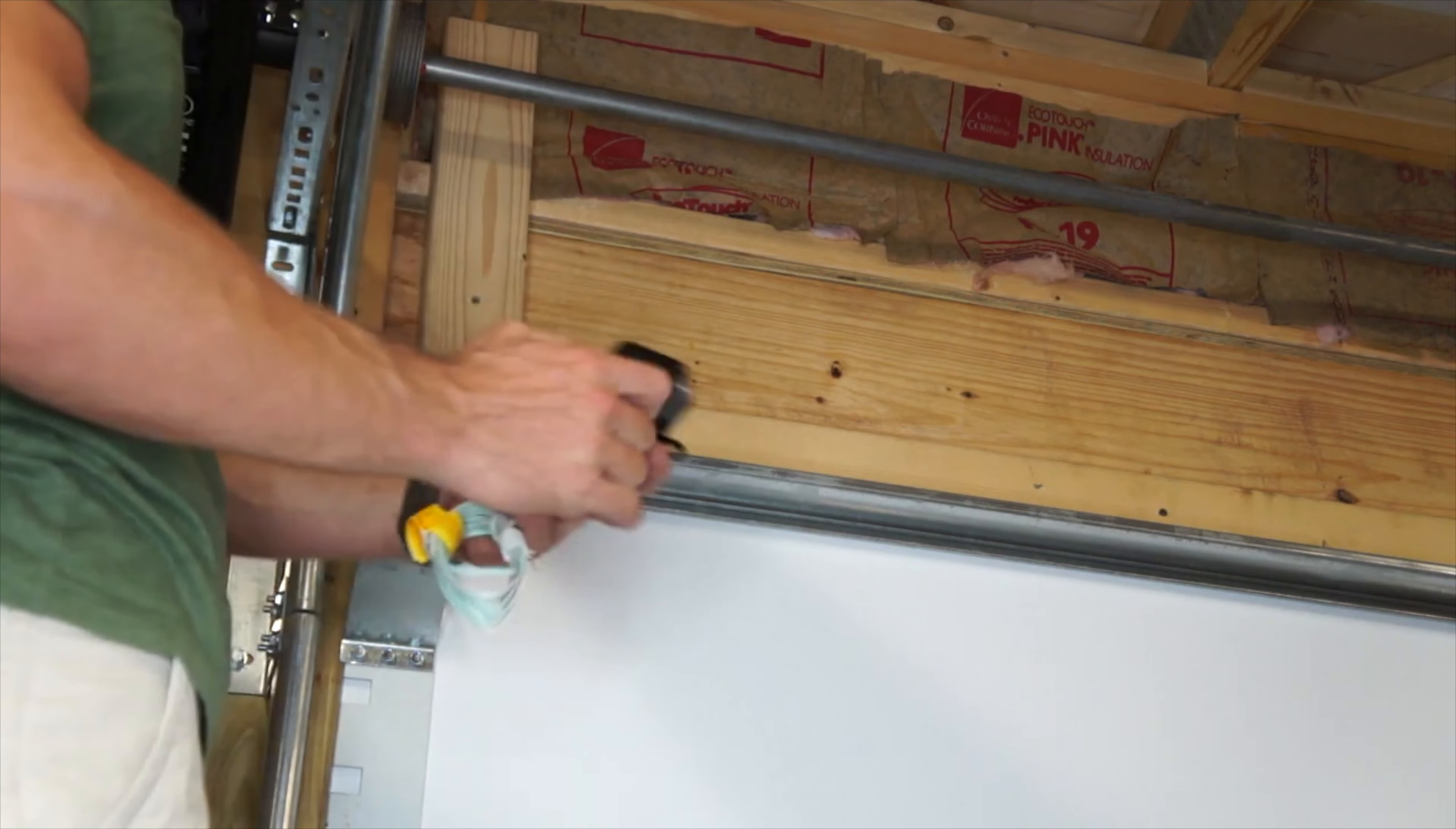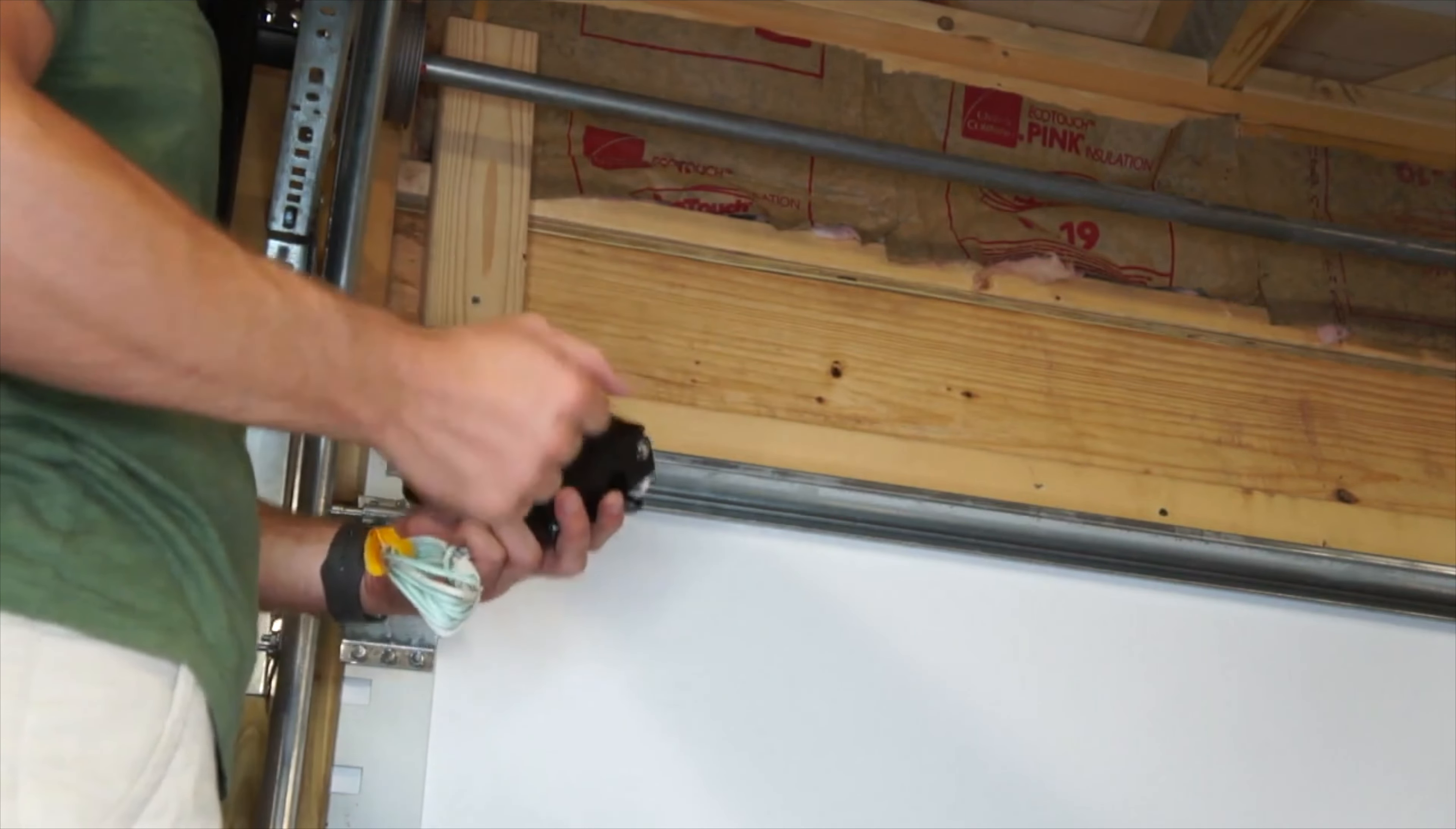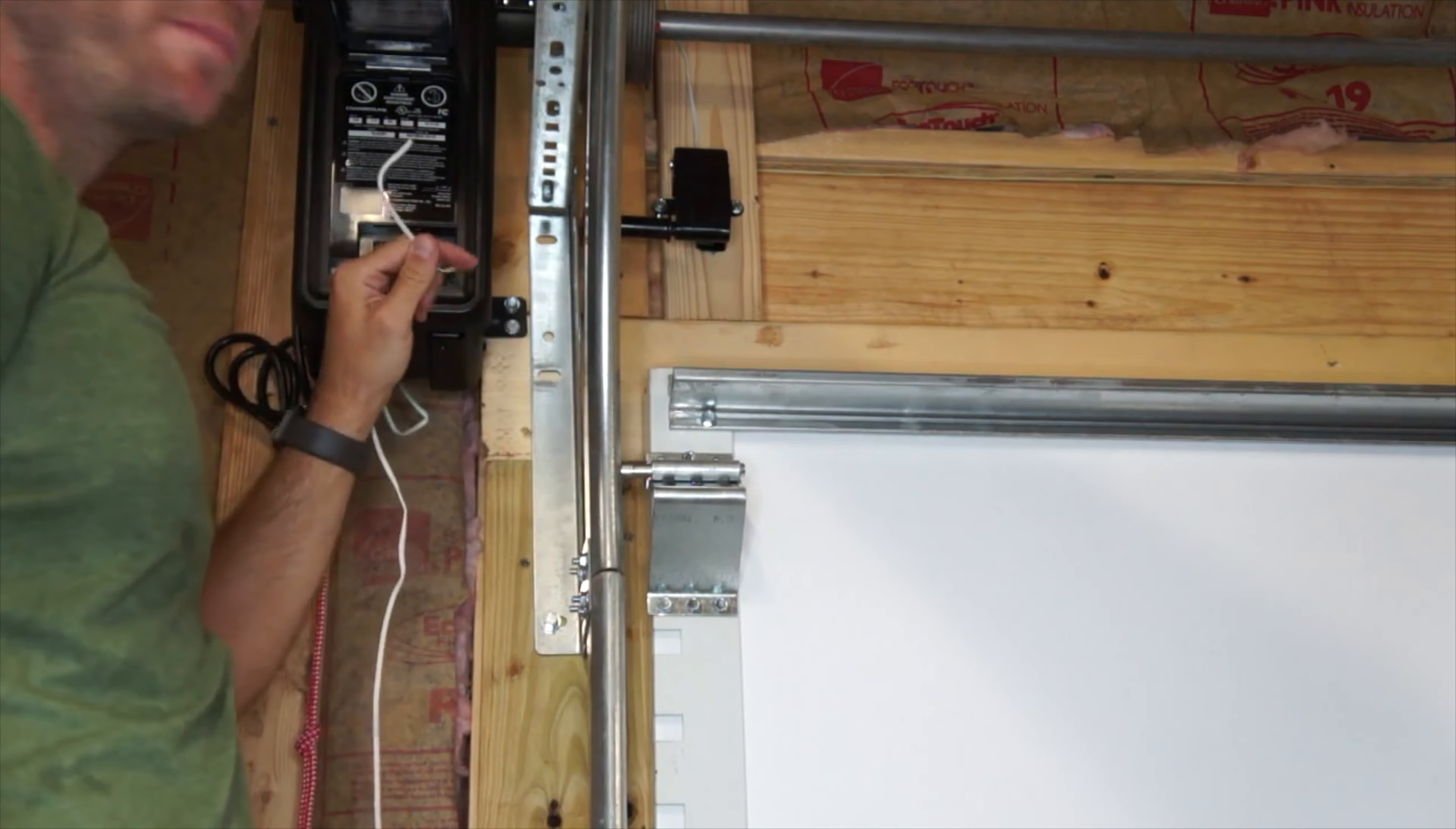And then I'm going to drill pilot holes for where the screws go and use these two-inch screws that were provided. They're the same ones that mounted the opener itself. Now that we've got the tension monitor mounted, I've run the line up and around, and I'm going to plug it into the box.